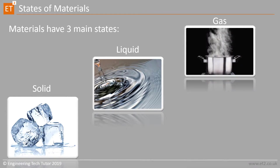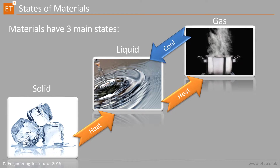It's possible for materials to change between all three of these states very simply by using heat. If we apply heat to a solid, we get a liquid. If we apply further heat to that liquid, it will turn into a gas. If I then cool the gas down, I can turn it back to a liquid, and if I further cool that liquid, I can turn it back into a solid.